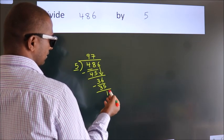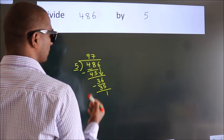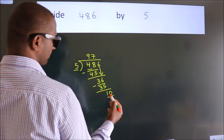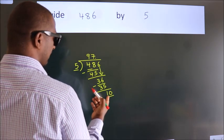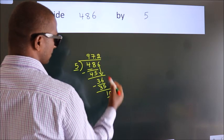After this, no more numbers to bring it down. So, what we do is, we put dot take 0. So, 10. When do we get 10? In 5 table. 5 2s 10.